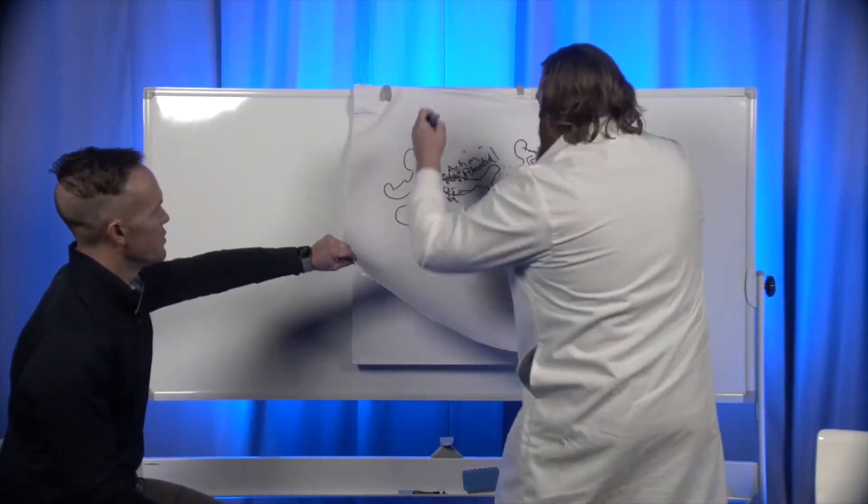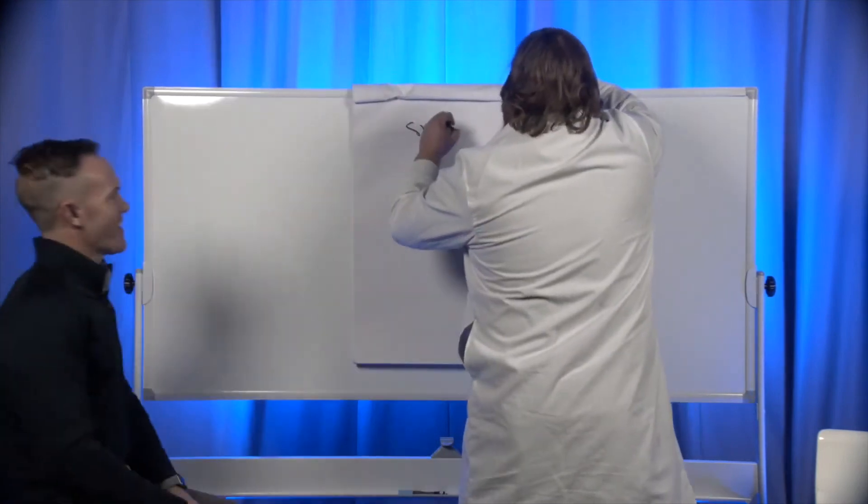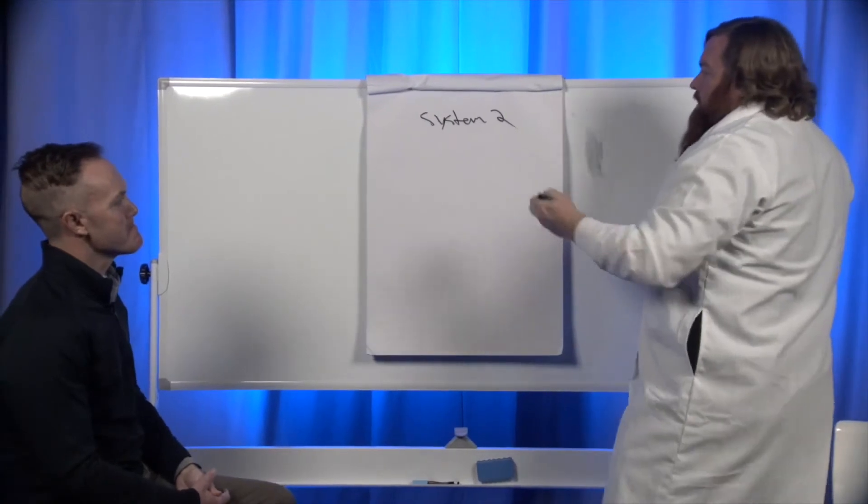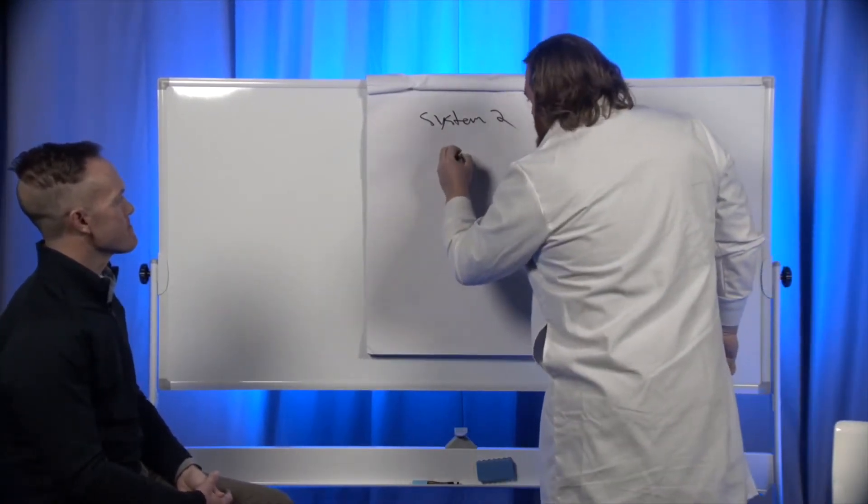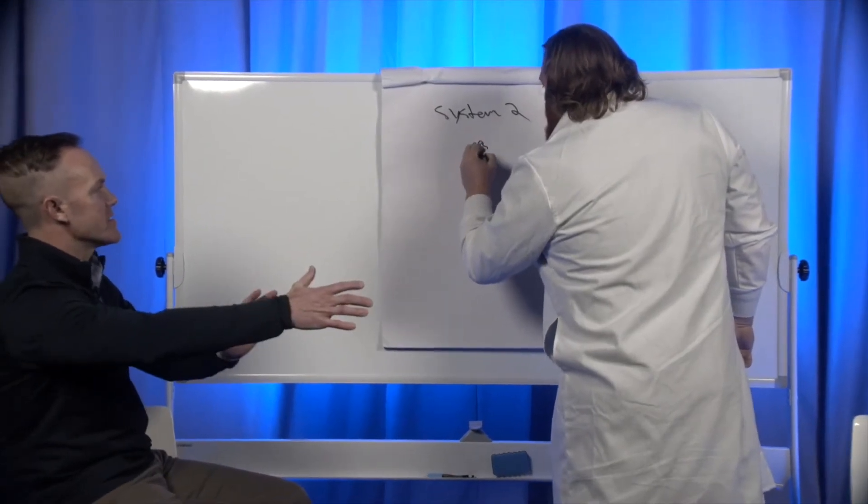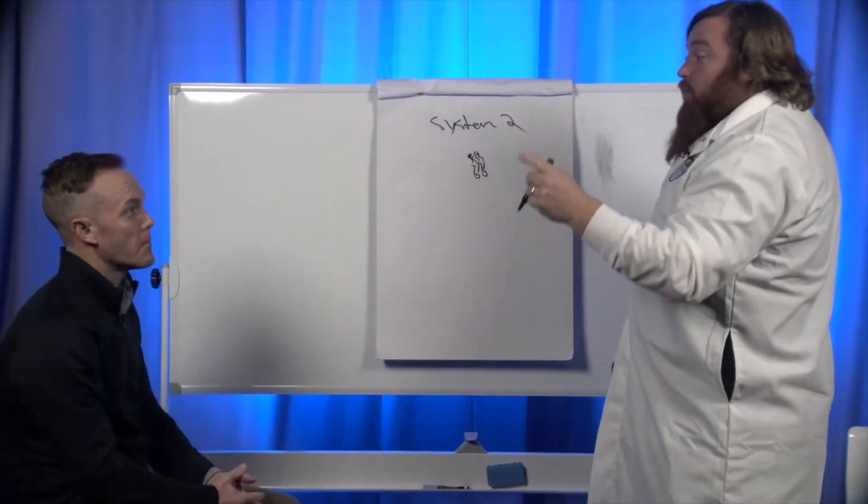So endocannabinoid receptor system two. Okay, we're just going to put system. Oh, this is permanent. You want a new page? Sure. System two, okay. So now what we're looking at is the cellular uptake of cannabinoids.